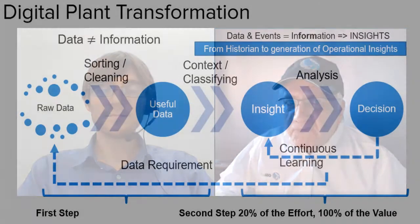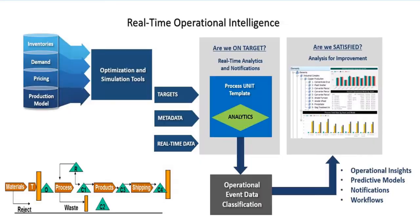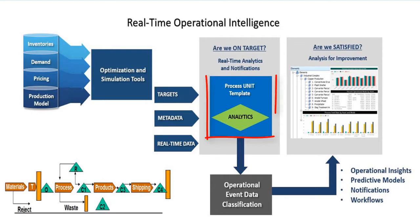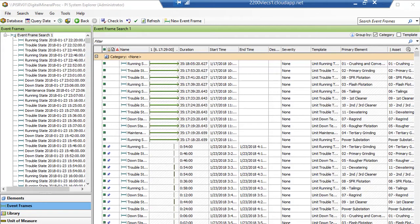We are going to be sharing today the lab that we have prepared, called the Digital Plant Template. This template takes raw data and transforms it into operational insights. We call it a process unit template with some analytics — comparing targets for every unit and the real-time data — and we generate event frames, which are available right out of the box from PI.